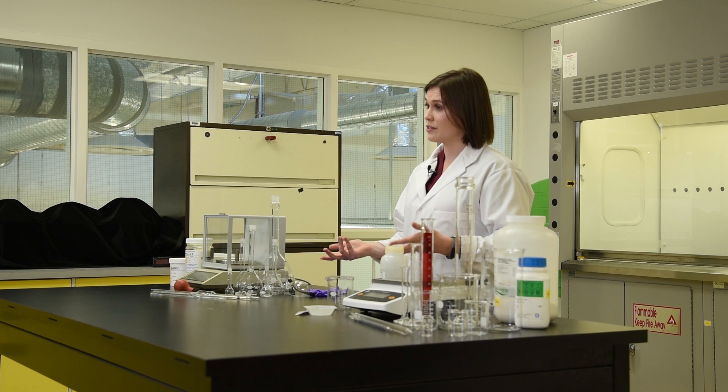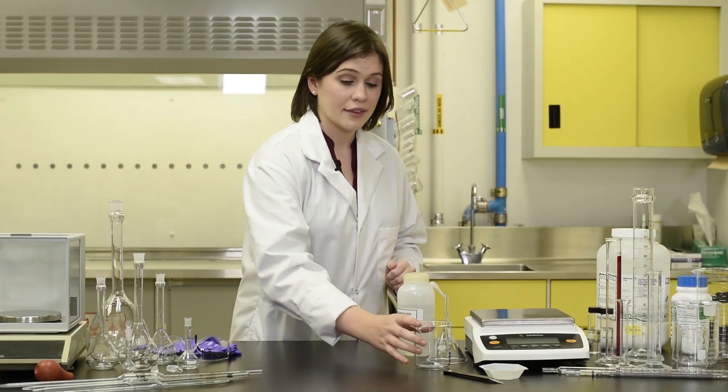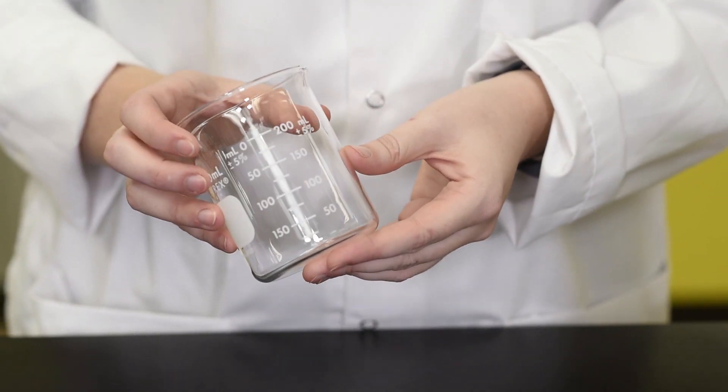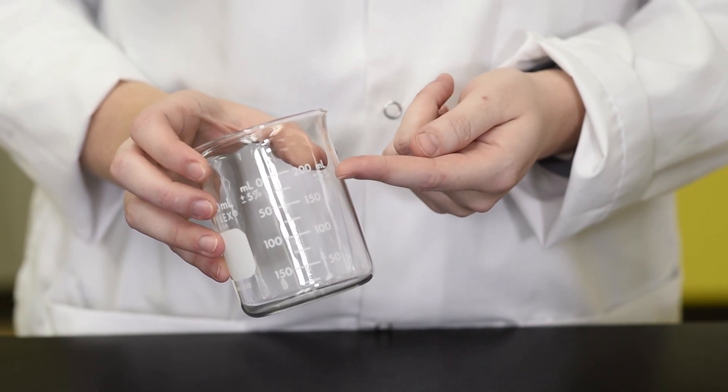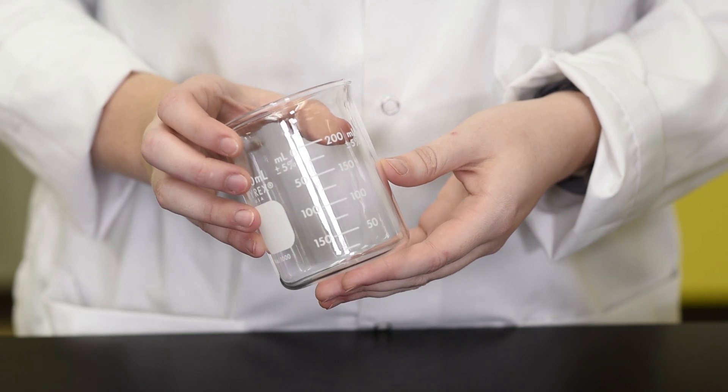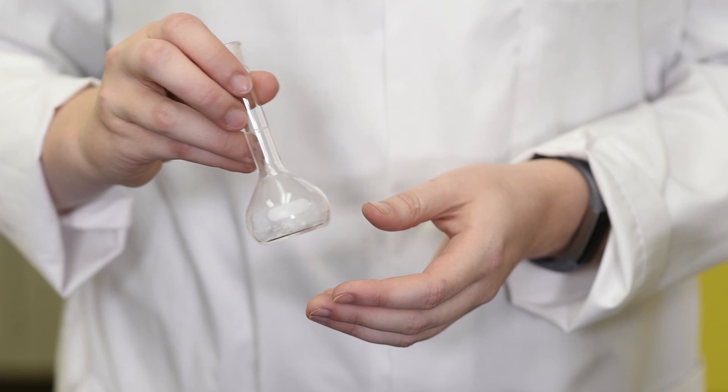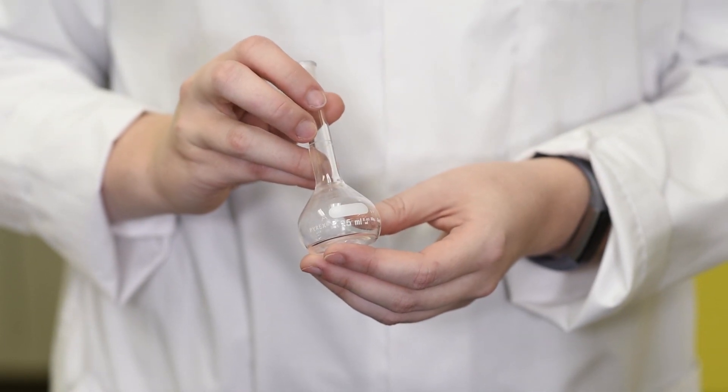Glassware will sometimes have volumetric tolerances written on the sides. This beaker, for example, measures a volume between 25 to 200 milliliters plus or minus 5% of the volume measured, meaning that if I fill the beaker to the 100 milliliter mark, the volume will actually be somewhere between 95 and 105 milliliters.